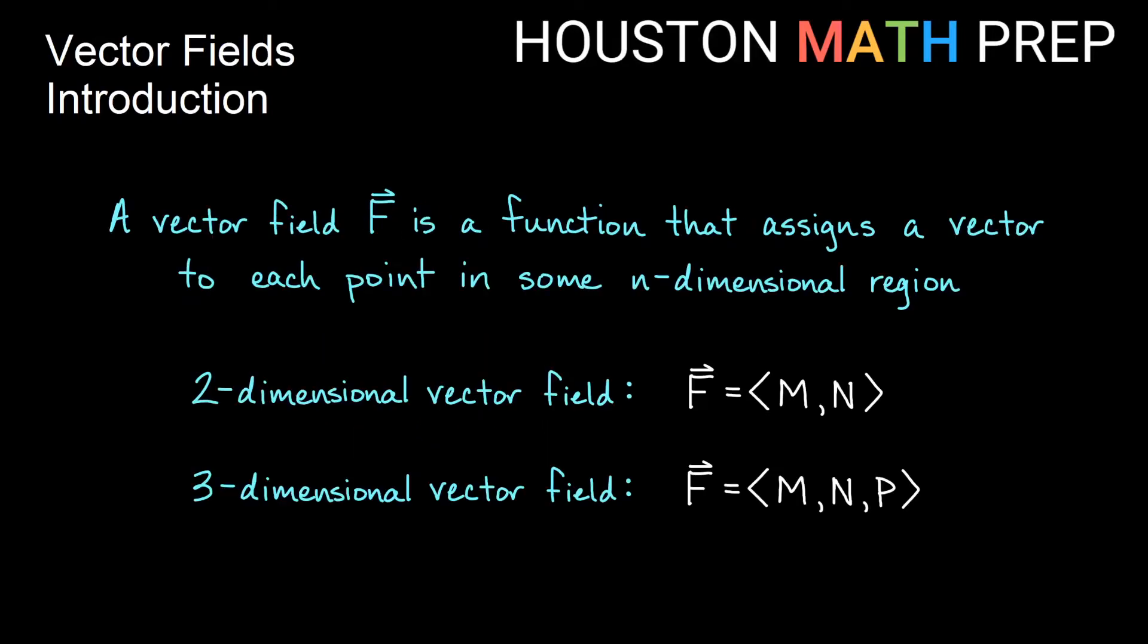More formally in mathematics, we'll say that a vector field, capital F, is a function. It assigns a vector to each point in some region of n-dimensional space. So for example, in two-dimensional space then we'll assign a vector that looks like <M, N> to each point in space. In three-dimensional space we'll assign a vector that looks like <M, N, P>, these different components, in three-dimensional space.